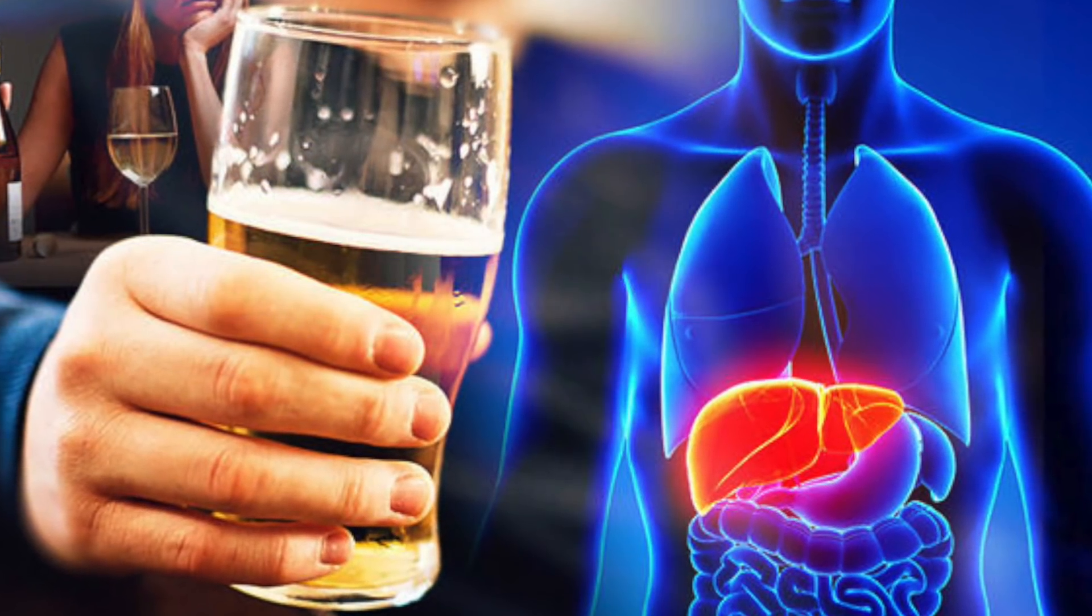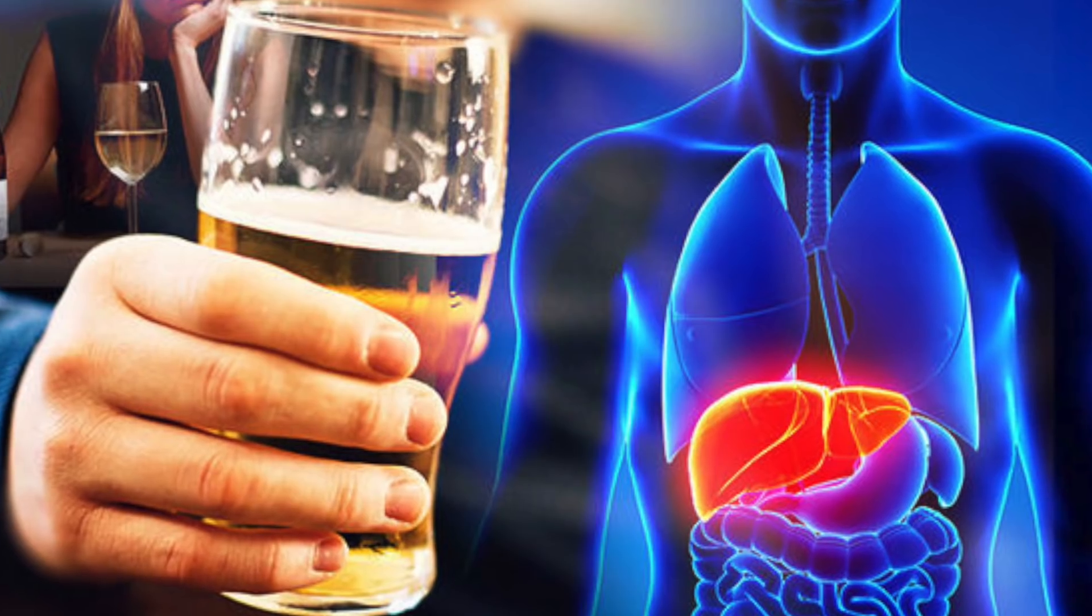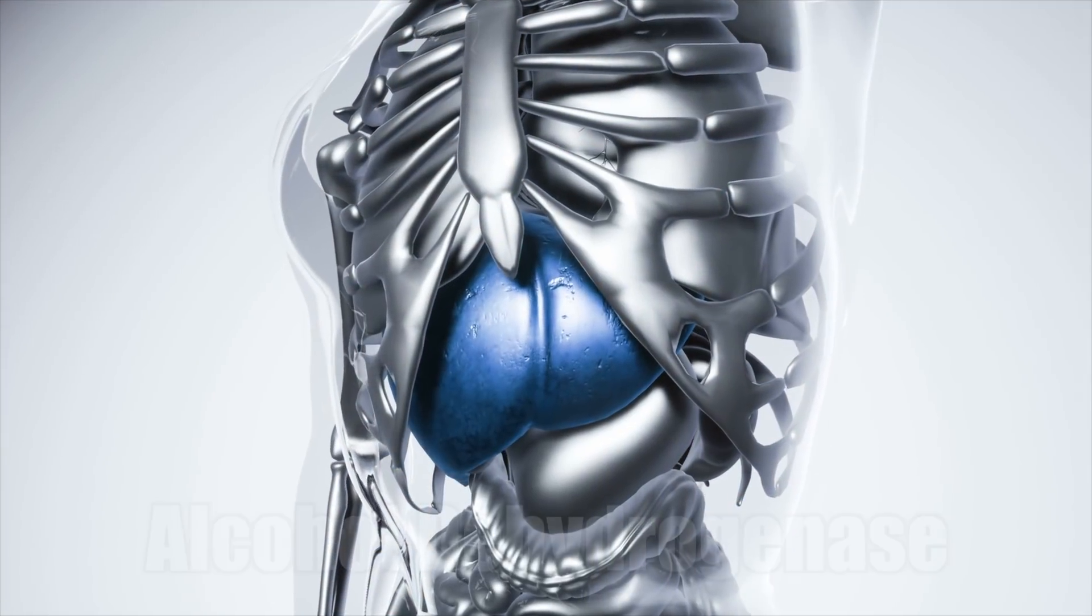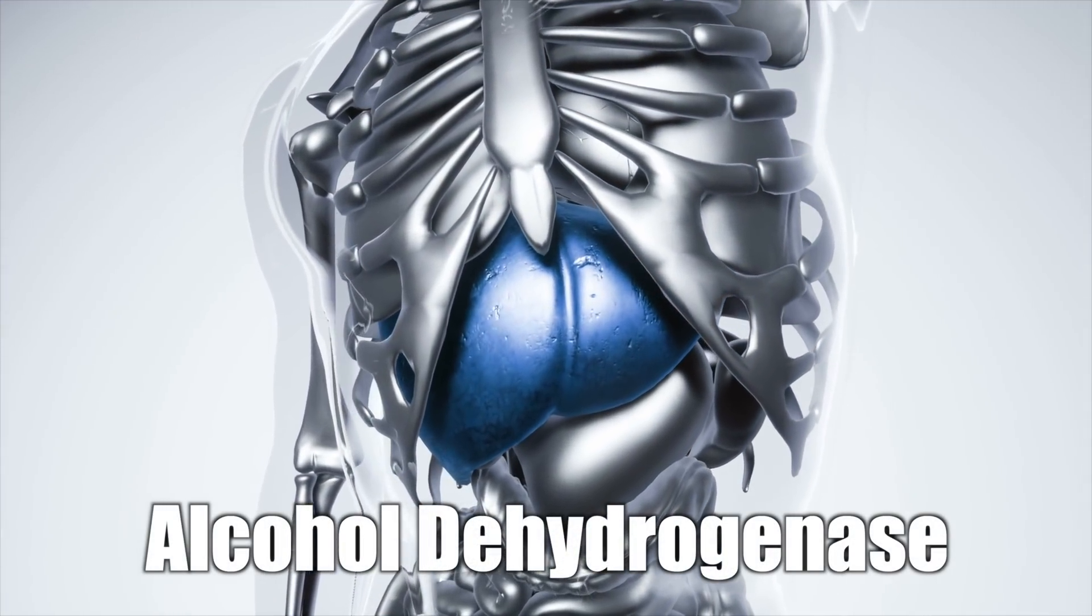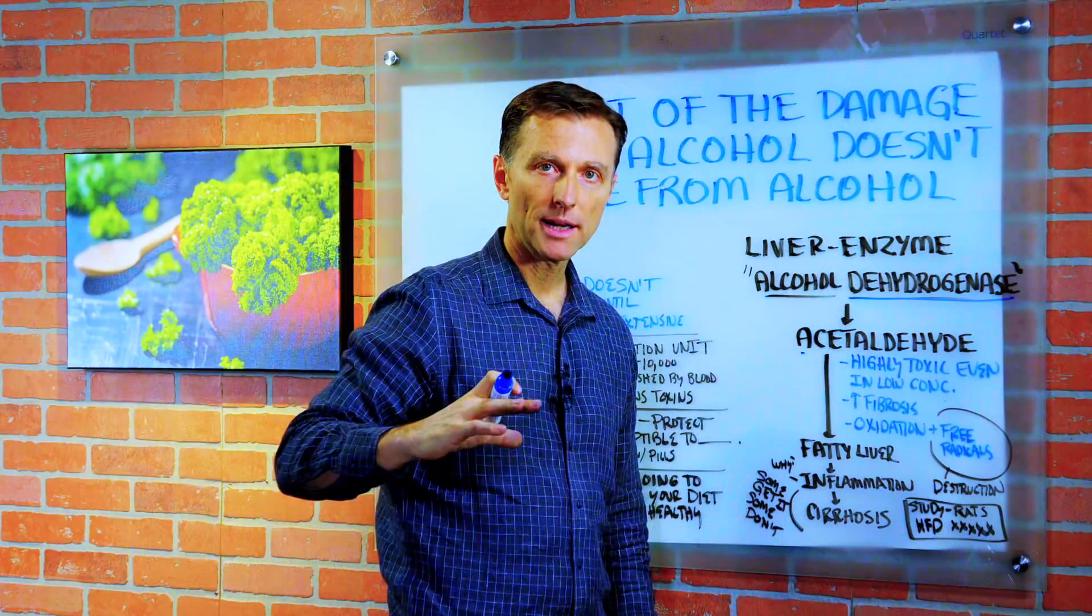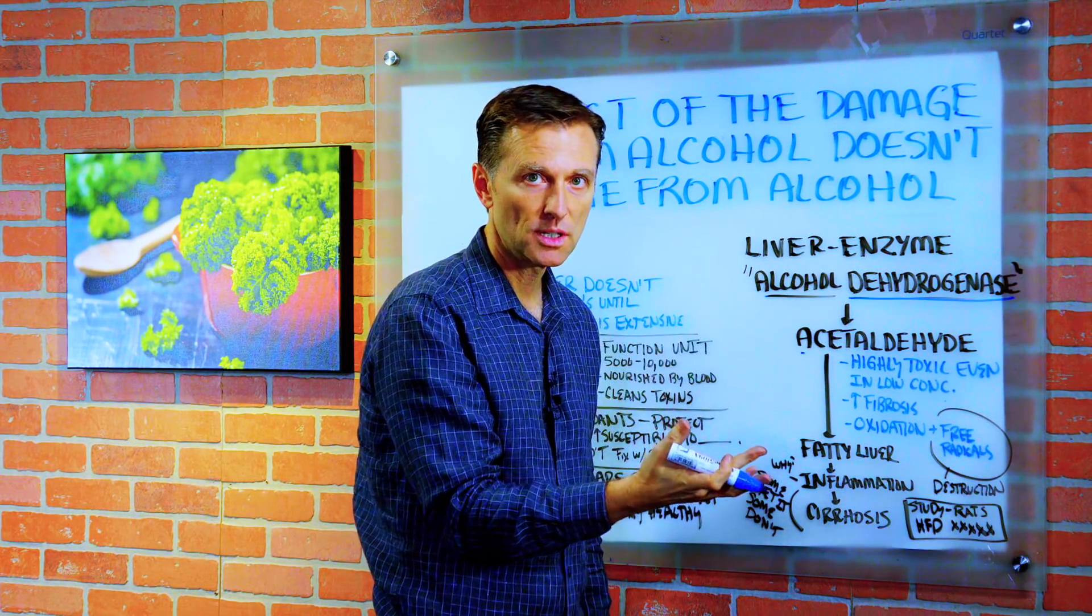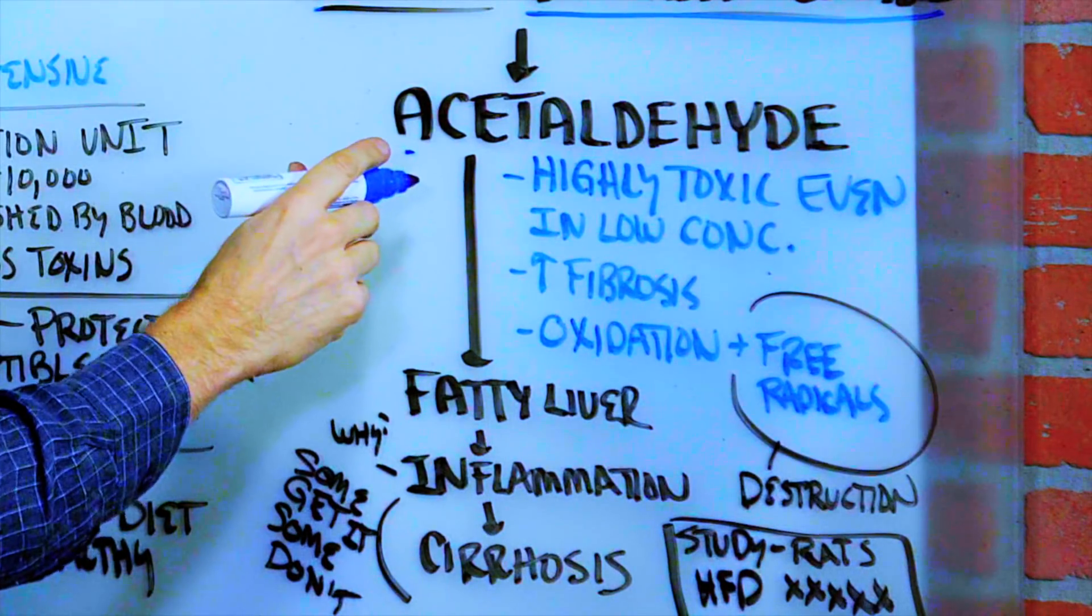When you drink alcohol, your liver has to break it down, and it does it through an enzyme called alcohol dehydrogenase. So the byproduct of what this enzyme breaks alcohol into is called acetaldehyde.